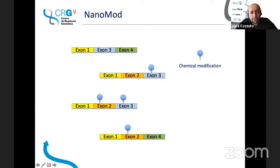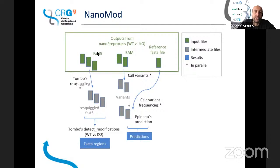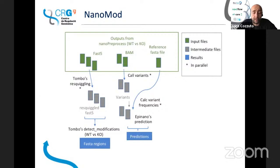Then there is Nanomod, which allows you to detect chemical modifications from different transcripts. There is another module for doing that. This module also works with outputs from NanoporeProcess. They need a wild-type and a KO for getting this information — so you need to run NanoporeProcess on both a wild-type and a KO sample, then you feed both of them in. A number of tools are run and you get the prediction from both, which you can then evaluate and filter to identify the real modification sites.